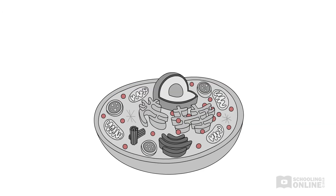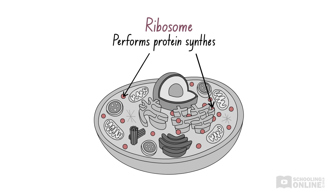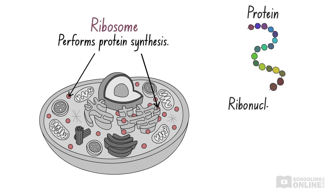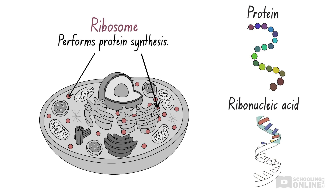A ribosome is a small organelle commonly found on the rough endoplasmic reticulum or in the cytoplasm. Ribosomes perform protein synthesis. This means that they follow the genetically coded instructions of DNA to make proteins for the cell. Ribosomes are composed of proteins, which are made from long chains of amino acids, and ribonucleic acid, which consists of a long chain of nucleotide bases.